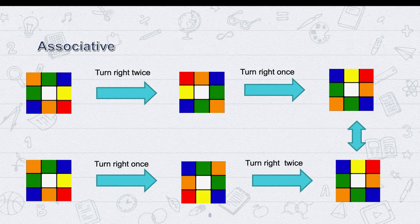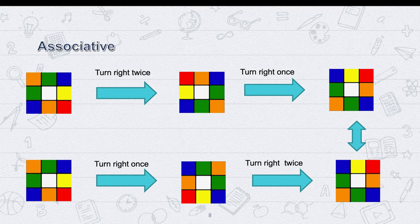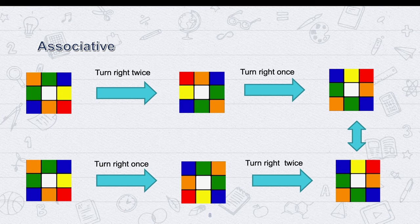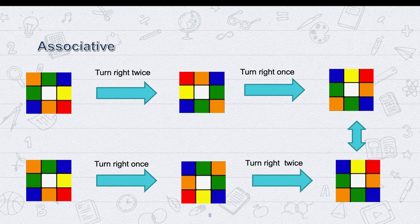For associativity, no matter where we put parentheses when doing a group operation, we still get the same result. Like if we turn our square right two times, then right once, that's the same as once, then twice. Another example is that for numbers, one plus two is the same as two plus one.